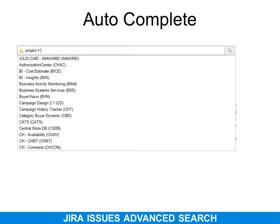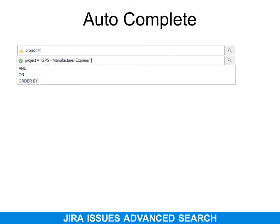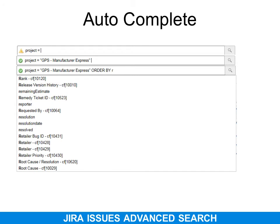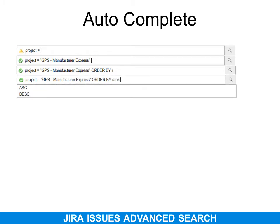If you can't remember the project name, just type 'project equals' and a drop-down of options appears. Auto-complete is very convenient here. For example, after choosing GPS Manufacture Express and adding a space, it automatically suggests AND, OR, or ORDER BY, and you can choose from the list. I chose ORDER BY, started typing 'R', and all R-word options appeared — I selected rank. Then I could choose ascending or descending. Auto-complete is wonderful; you just need to remember the first part of what you're entering.